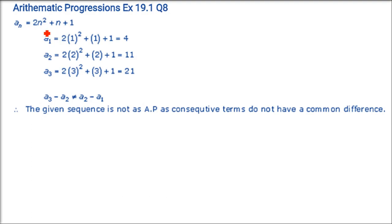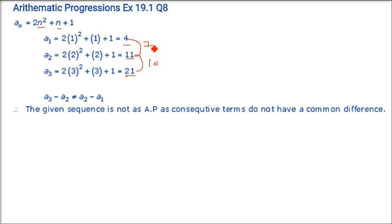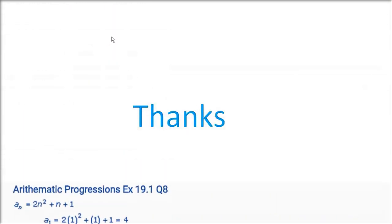The nth term is given as aₙ = 2n² + n + 1. Show that it is not an AP. Put n=1: 4. Put n=2: 11. Put n=3: 21. Then 11 - 4 = 7, but 21 - 11 = 10. Since 7 ≠ 10, there is no common difference, and hence the sequence is not in AP. This is all about this exercise.